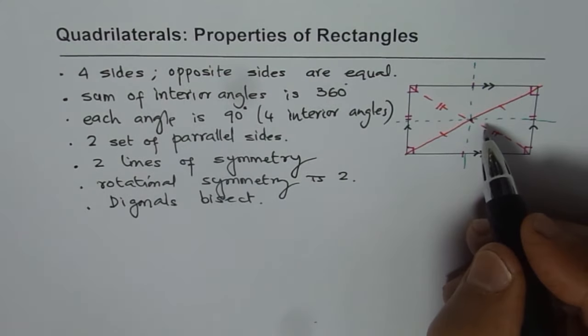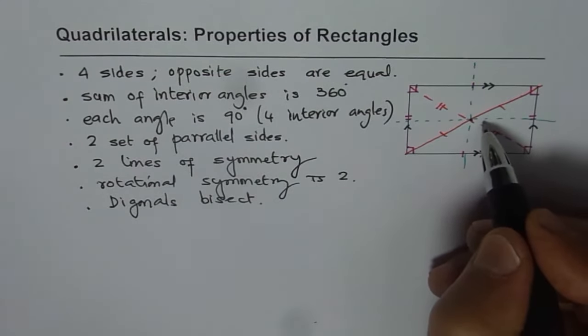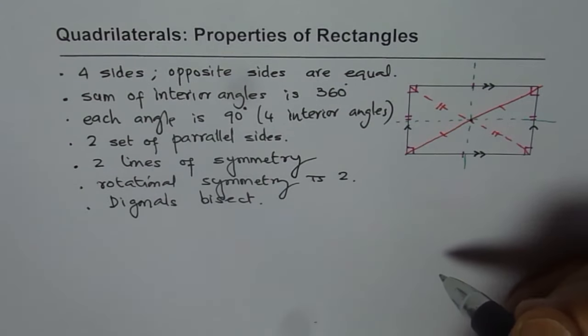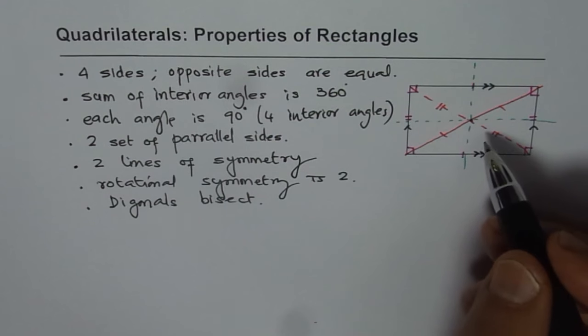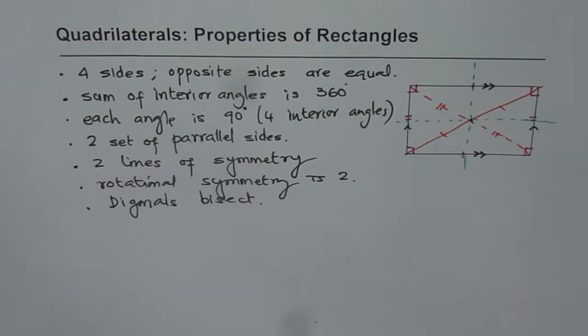But do they bisect at 90 degrees? No. This is acute, that is obtuse. Do you see that? In a rectangle, they don't bisect at 90 degrees. In a square they do, and that is one of the major differences between a square and a rectangle.